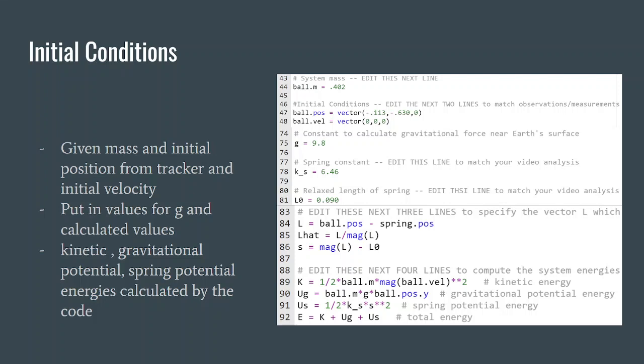So initial conditions: given mass and initial position from the tracker and initial velocity, we know initial velocity because it's dropped from rest, so initial velocity is zero. We can put in values that we just calculated and the value for gravity. And we can find kinetic, spring potential, and gravitational potential and total energy using all these values that we found before, as you can see on this code right here.